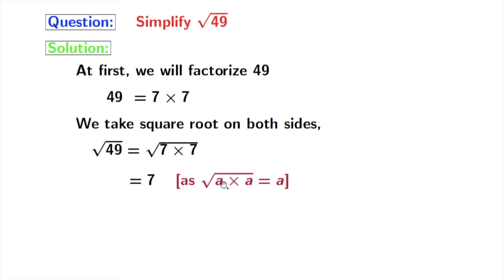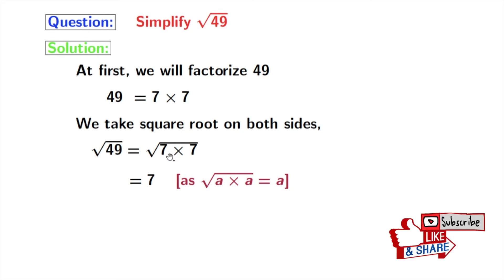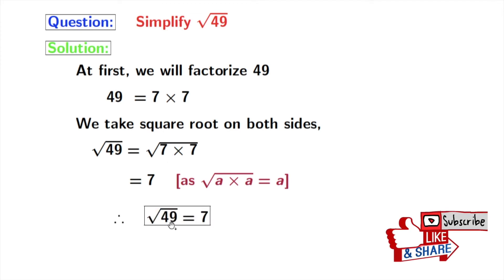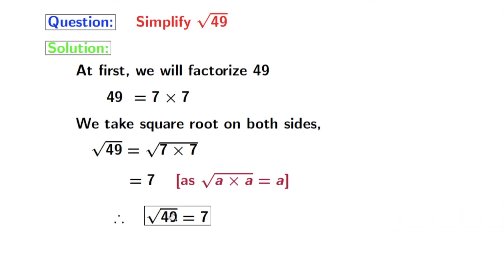A is 7 here. So, the square root of 49 is equal to 7. This is our solution.